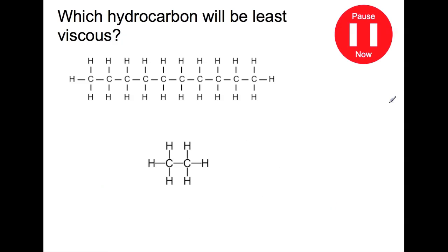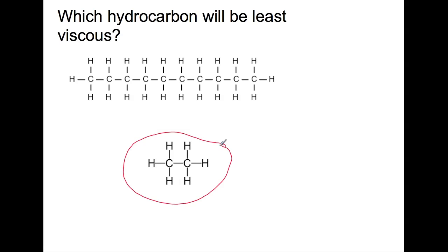Pause the video now and work out which carbon will be least viscous. Remember viscous means how thick the liquid is. High viscosity means that you have lots of carbons in your carbon chain. So to be least viscous you need to have a few carbons. So that will be this molecule.